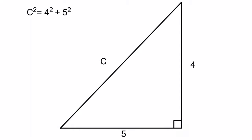Now that we've determined that c squared equals 4 squared plus 5 squared, let's work those out. 4 squared, which is 4 times 4, is equal to 16, plus 5 times 5, which is equal to 25. So c squared is equal to 16 plus 25. Let's just add those together — c squared is equal to 41.